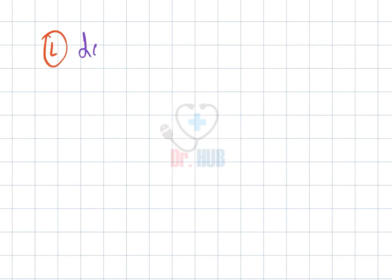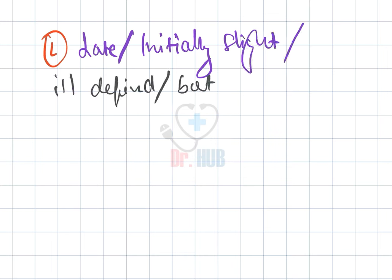In case of L, anesthesia is late, initially slight and ill-defined but extensive over the cool areas of the body.